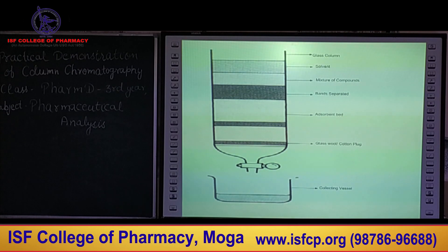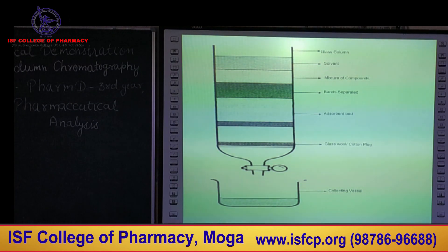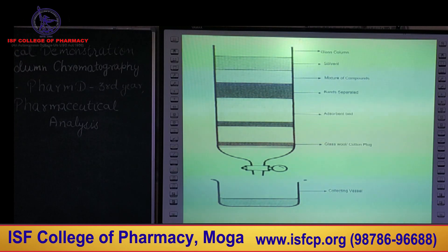This is a diagrammatic representation of column chromatography, in which we have a glass column. At the bottom of the glass column we have placed a glass wool and cotton plug. This cotton plug prevents the movement of the adsorbent bed or the stationary phase through the column. Upon that we have packed the adsorbent up to the minimum required amount, then placed our mixture of components. After our mixture of compounds adsorbs on the adsorbent bed, we place a cotton plug and after that solvent is run through the column. The collecting vessels for the eluent are small conicals or beakers.